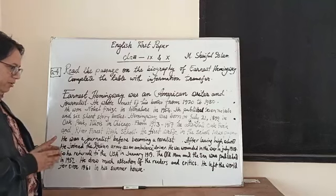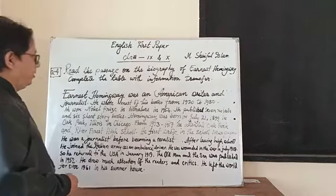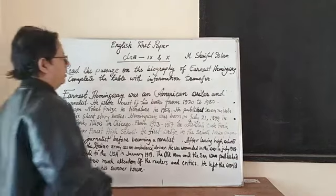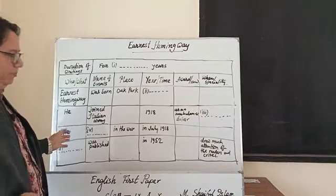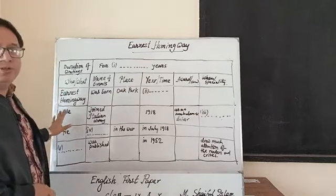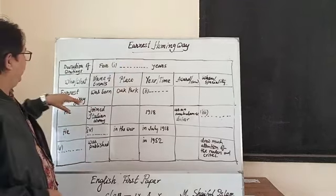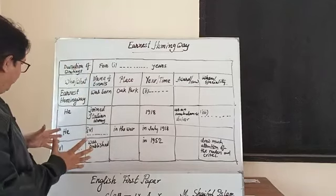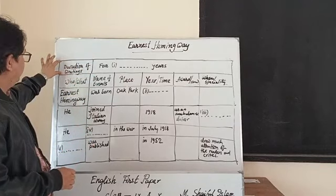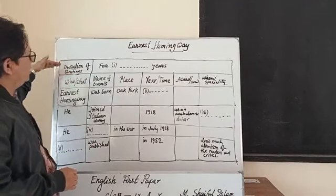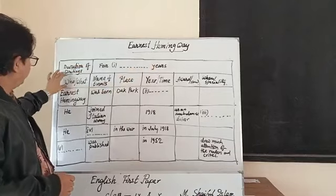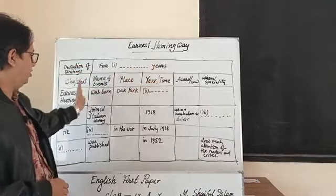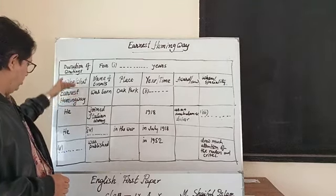So this is the passage you have already listened to. After that we will see the table for information transfer. Here is the second part — the table for information transfer on Ernest Hemingway. We have to first think about the passage and the table. The columns indicate: duration of writings, name and events, places, time, and how.